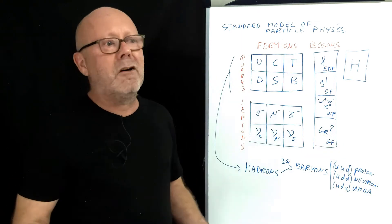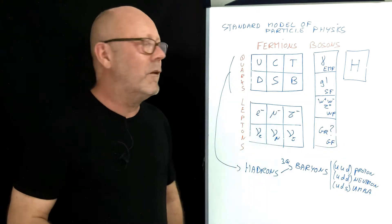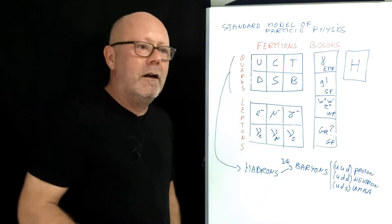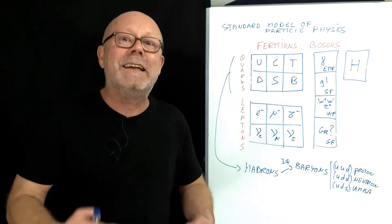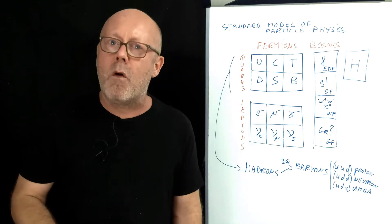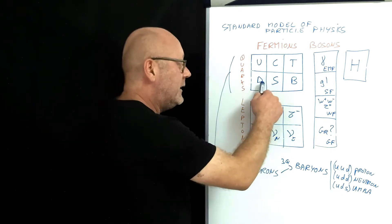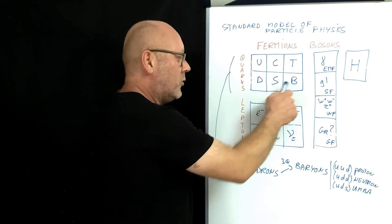All fermions have got a kind of symmetric brother. For example, the upquark has got a counterpart in antimatter called the anti-upquark. You have the anti-down, the anti-charm, the anti-strange, the anti-top, the anti-bottom.